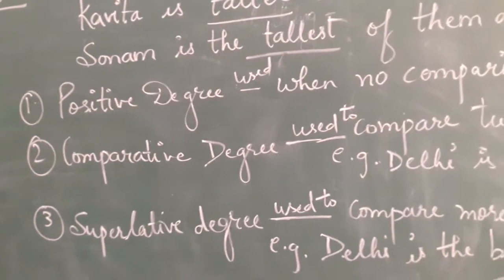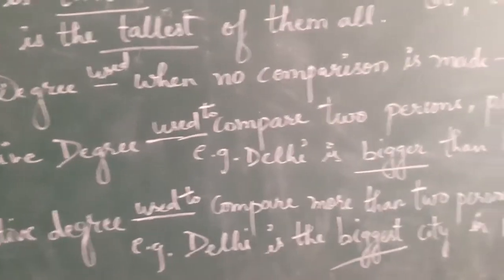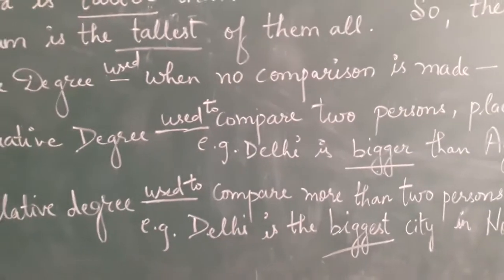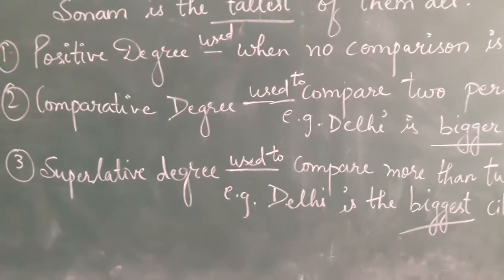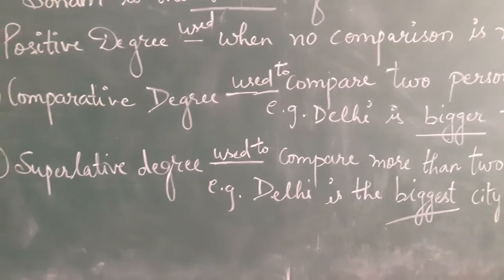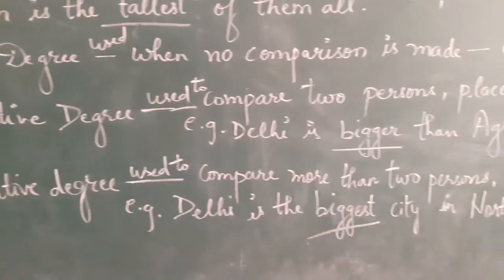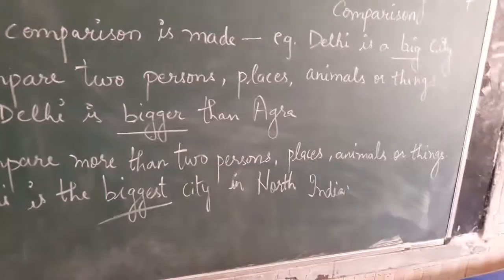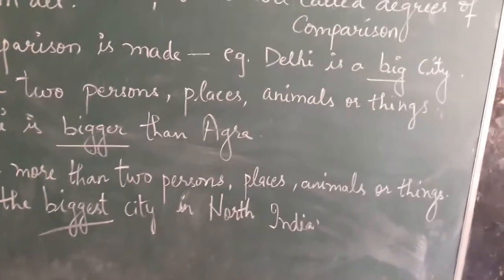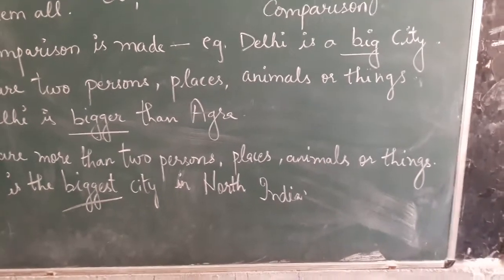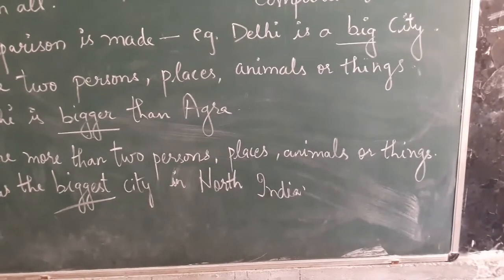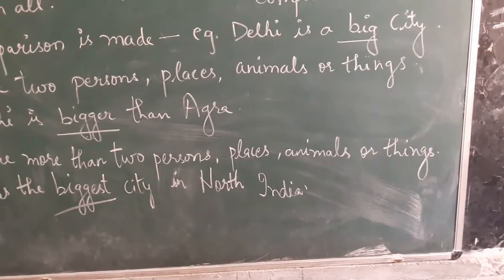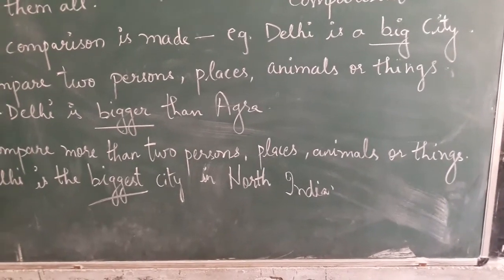Positive degree is used when no comparison is made. For example: Delhi is a big city. Here Delhi is not compared with any other city, so this is an example of positive degree.